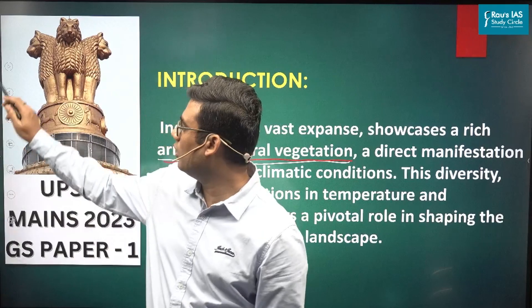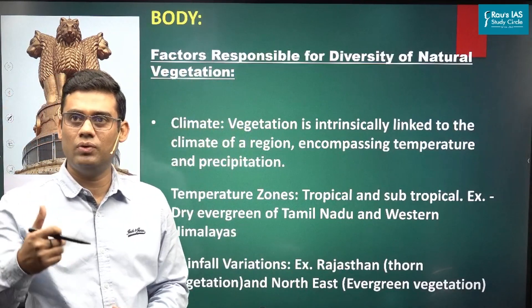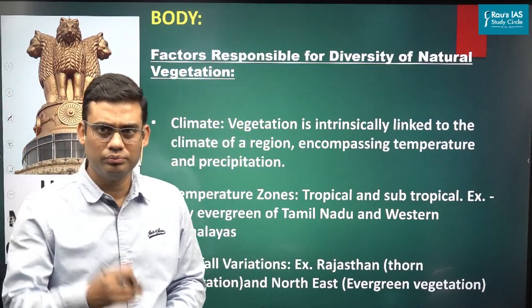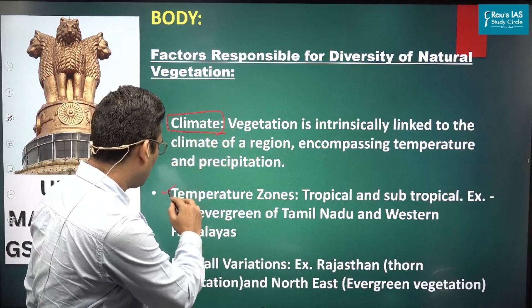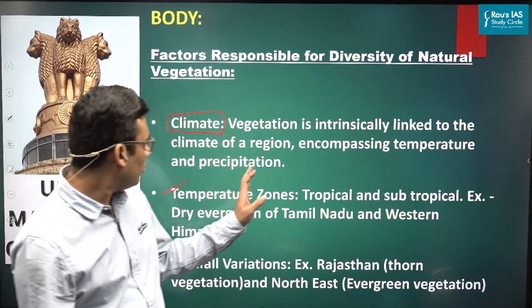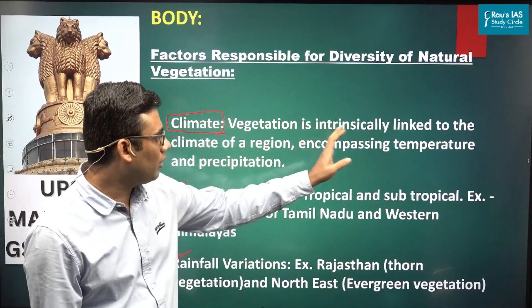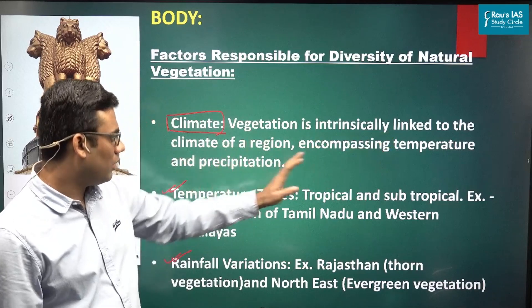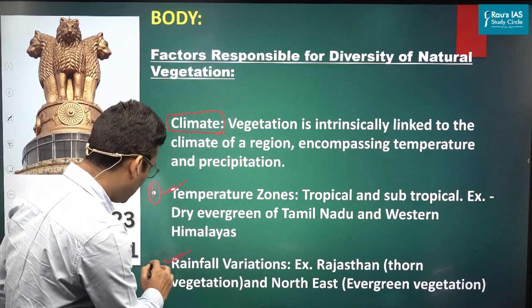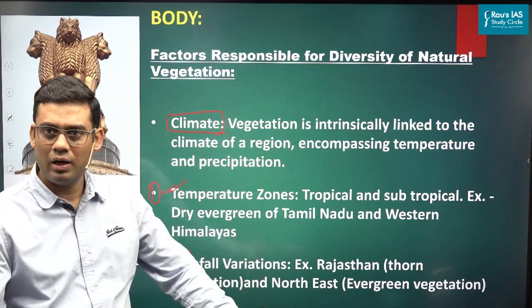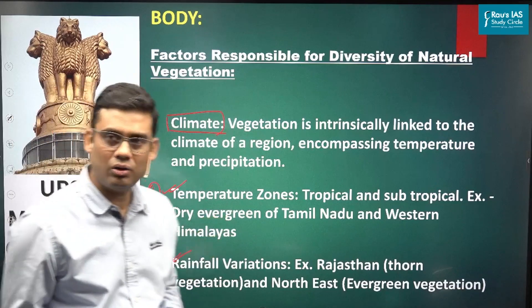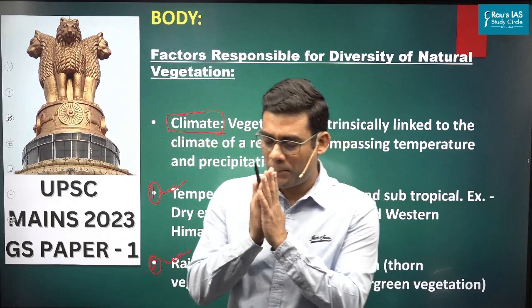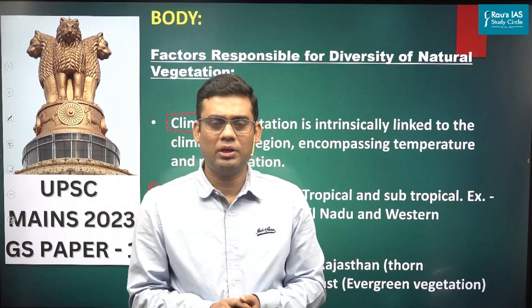Moving to the body of the answer, under climate we discuss temperature and rainfall. For the first pointer — temperature zones — we write about tropical and subtropical regions. A good example is dry evergreen forests. In Tamil Nadu, with precipitation around 100 centimeters, we find tropical dry evergreen forests, with tamarind as an important species. In the western Himalayas, also receiving similar precipitation, we find subtropical dry evergreen forests — a colder variation — where olives are an important species found up to 1000 meters altitude.